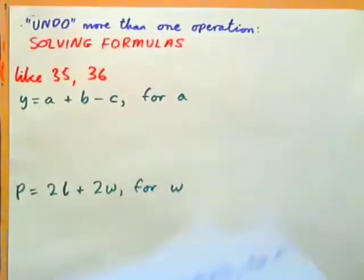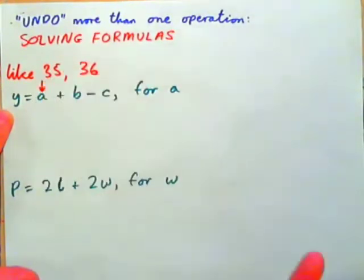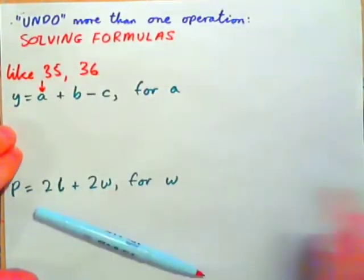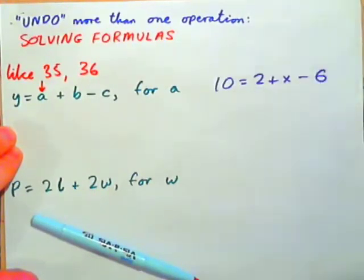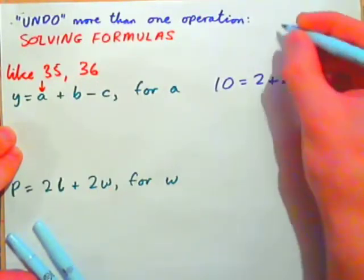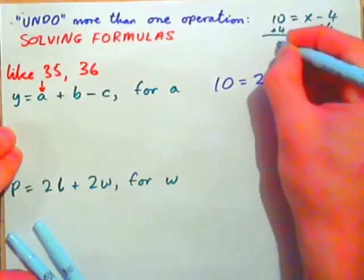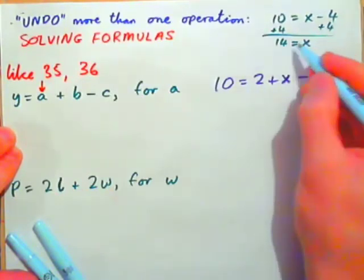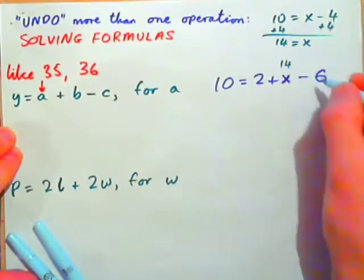Let's start with Y equals A plus B minus C — solve that for A. First thing, put an arrow on the A. We need A on its own. Let's think of an example with numbers: if we had 10 equals 2 plus X minus 6, we could put 2 and negative 6 together to get negative 4, giving 10 equals X minus 4. Then add 4 to both sides: 14 equals X. That works because 2 plus 14 is 16, minus 6 is 10.